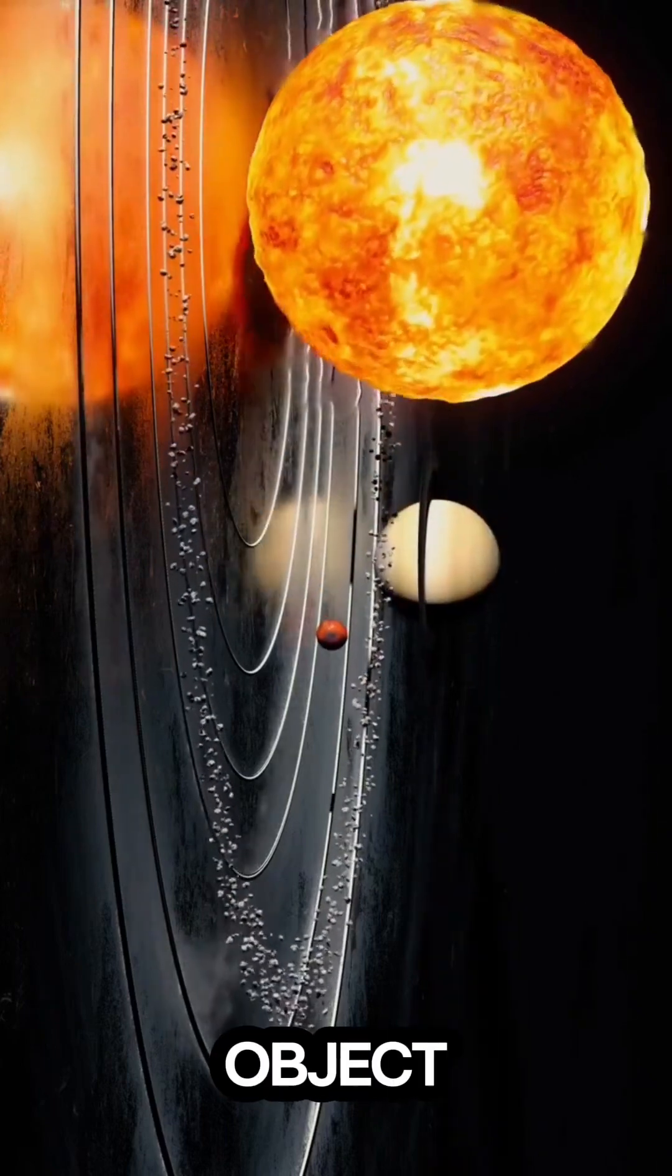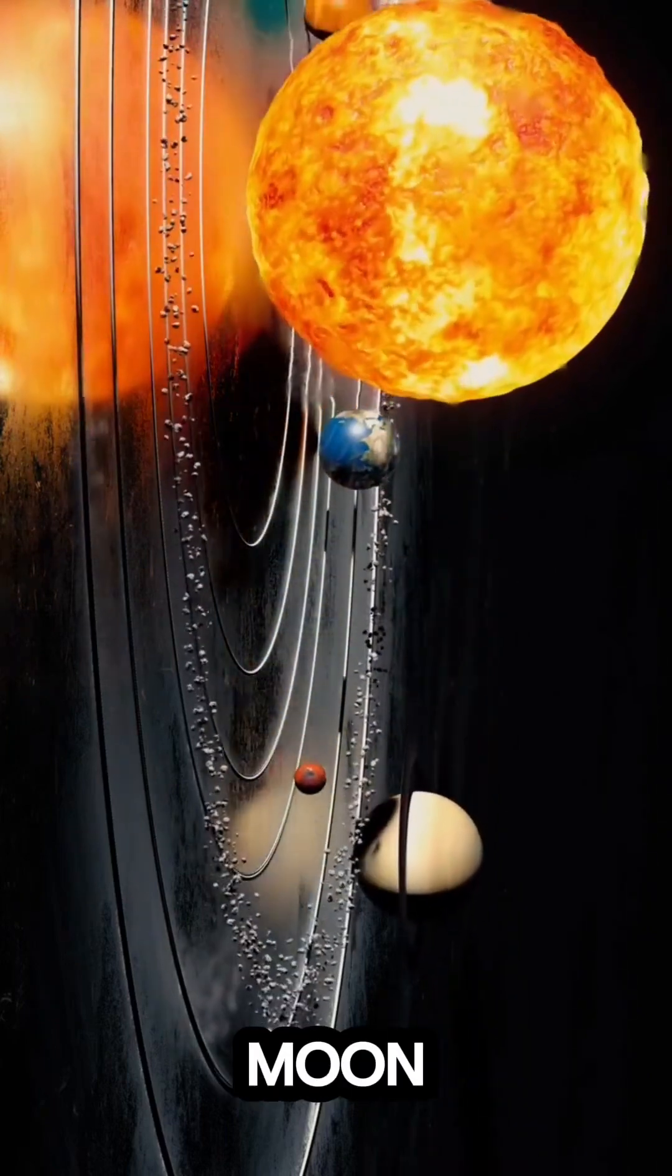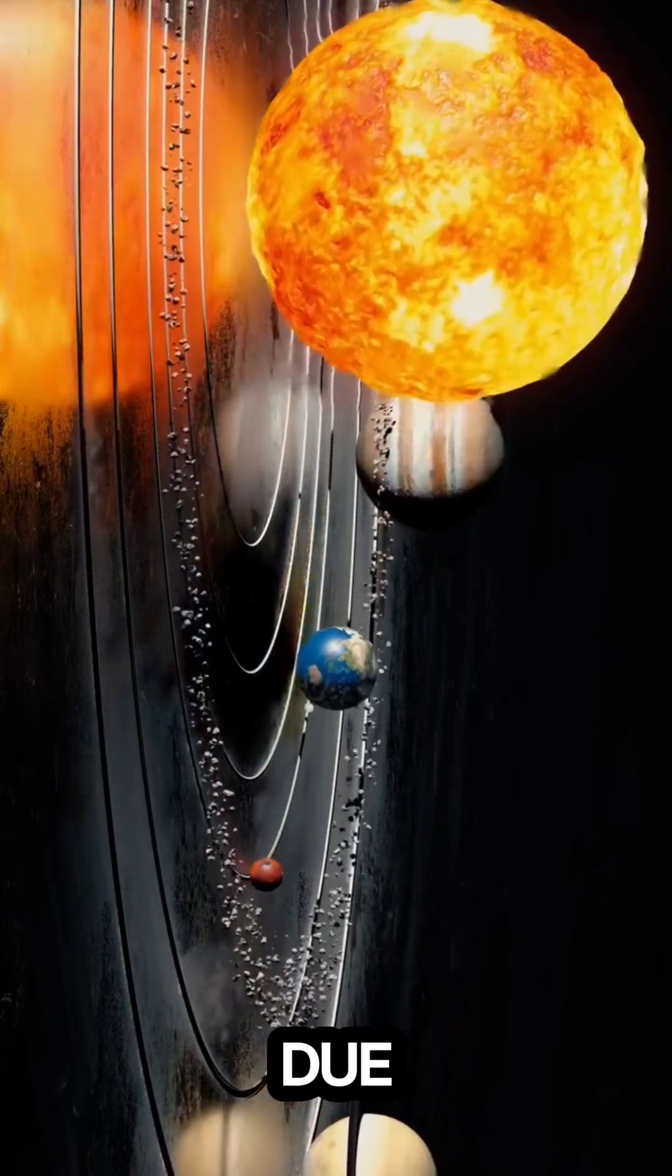An orbit is the curved path that an object, such as a planet, moon, or satellite, follows around another object due to gravity.